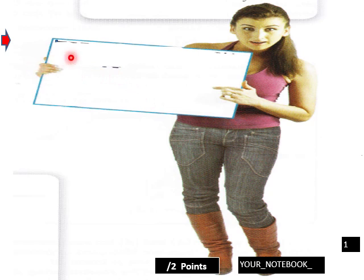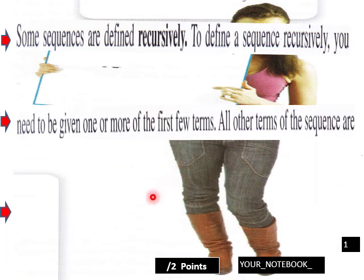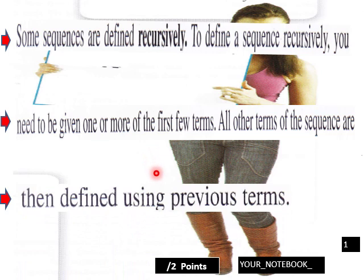Start out with a notebook slide. Some sequences are defined recursively. To define a sequence recursively, you need to give one or more of the first few terms. All other terms of the sequence are then defined using previous terms, which gets a little more complicated.